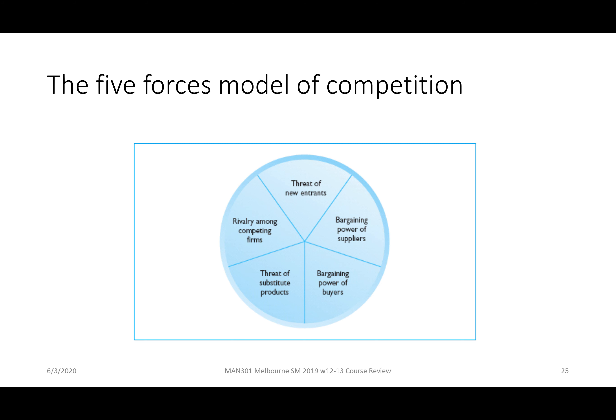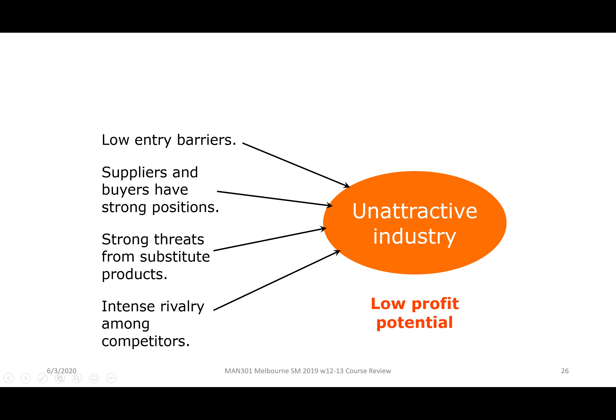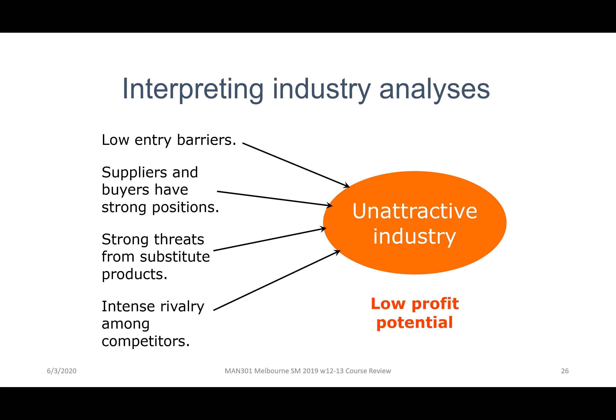We did that in Moodle and in tutorials. Interpreting our industry analysis, we defined two ways in which an industry is attractive or not attractive. An unattractive industry has low barriers to entry, suppliers and buyers both have strong positions — meaning the company faces pressures from both sides — a strong threat of substitute products, and intense rivalry among competitors.